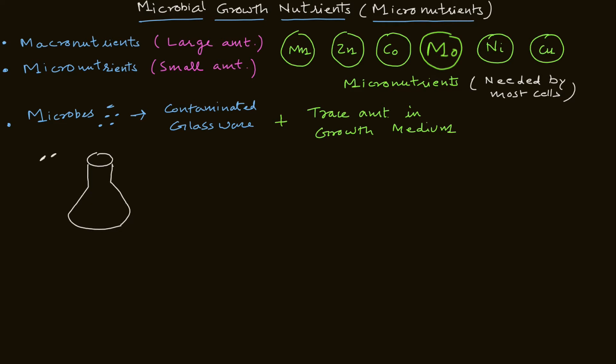Suppose you have a bacterial cell that you're trying to grow in media. For example, if I'm using LB media, it will have a specific concentration of macronutrients but enough micronutrients so that bacteria can fulfill their requirements. Micronutrients can also be present in the glassware.